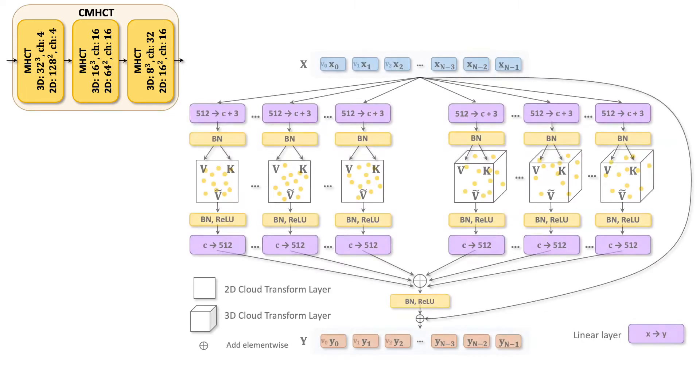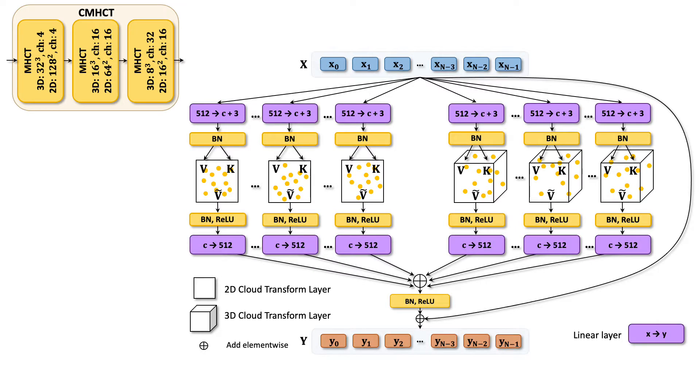Each multi-head cloud transform takes the features of the input point cloud X and processes it using parallel heads. Each of the heads transforms the features linearly and rasterizes them over a 2D or 3D grid. The rasterized features are processed with a convolution and then de-rasterized. Finally, each head applies a linear transform to each feature, and the results of parallel heads are summed together providing an update to the feature vector of each point.